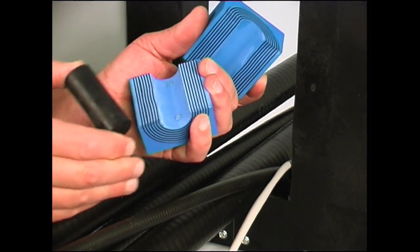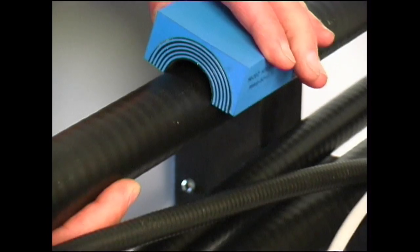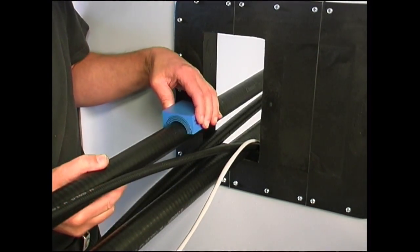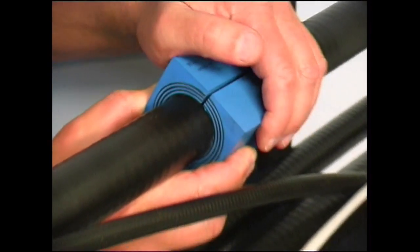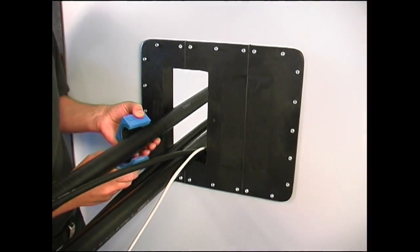Adapt the modules to the right cable diameter by removing layers from each half. Peel off each layer until the module fits perfectly. It is important that there is a 0.1 to 1 mm gap between the module halves when fitting the cable.